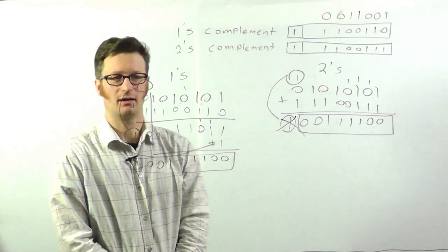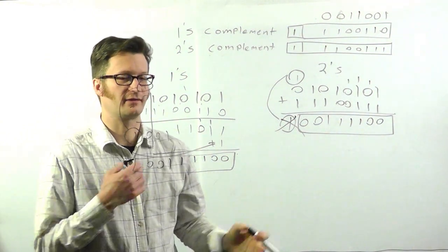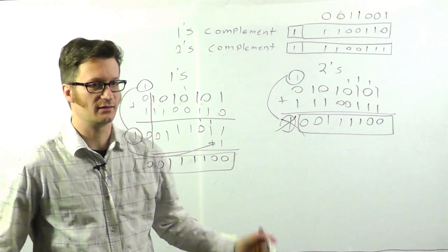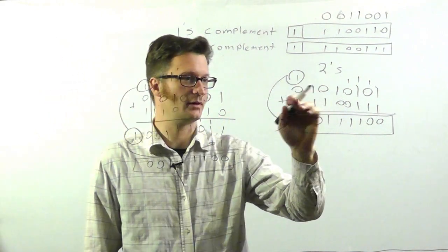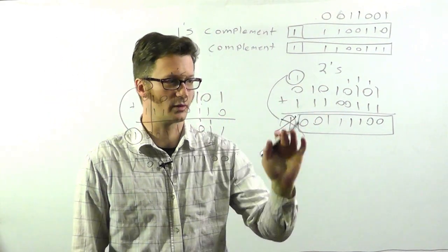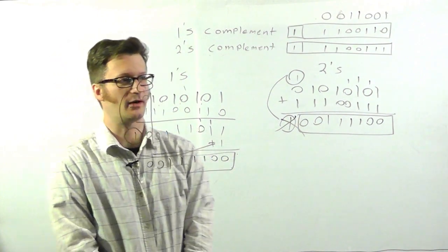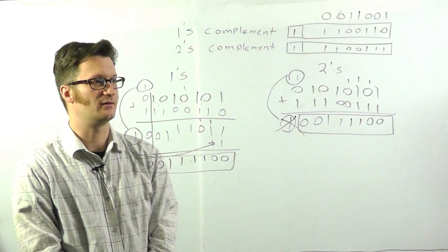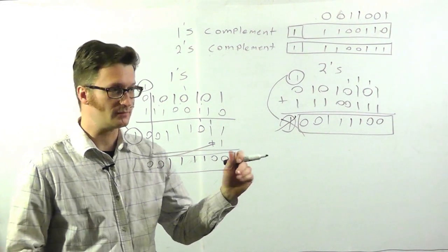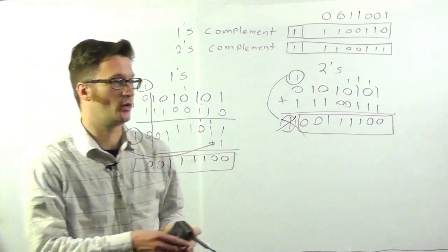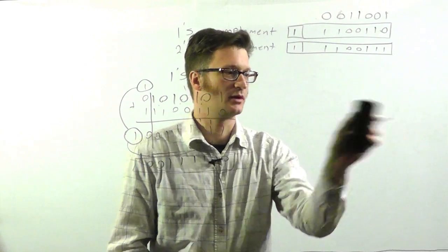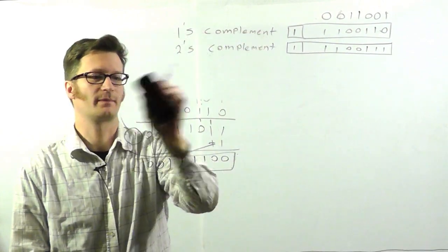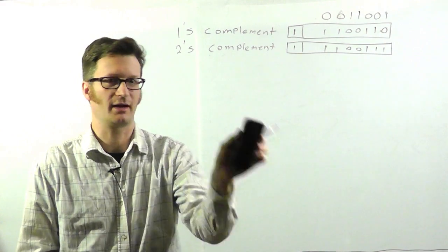So, that's the two ways to do signed addition. And we didn't necessarily have to do a positive and a negative number. It works for two positive numbers or two negative numbers. You just do the two's complement. Now, actually, let's take a look at one more case here. We're going to do the two's complement of something that's going to end up negative.